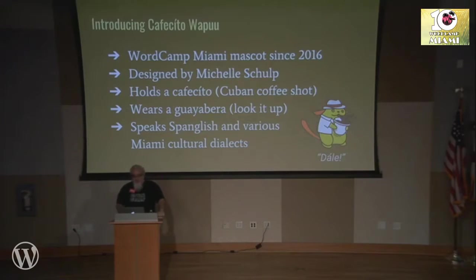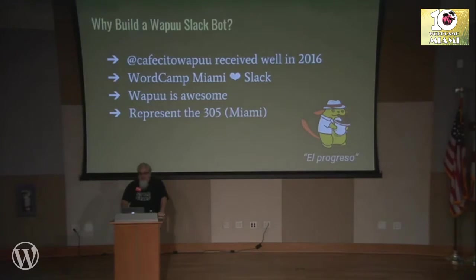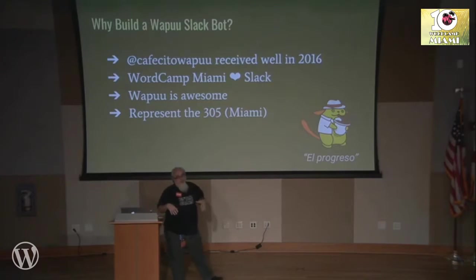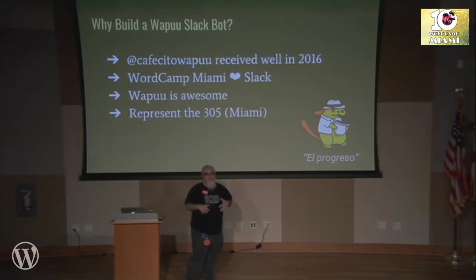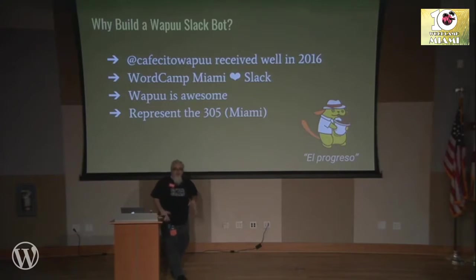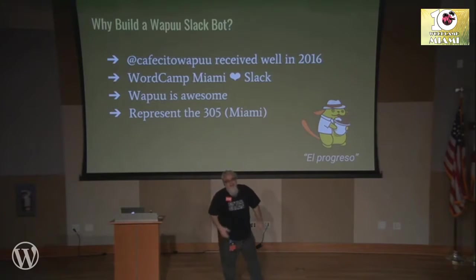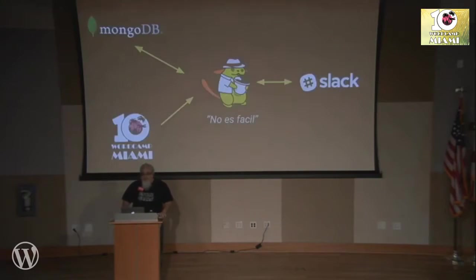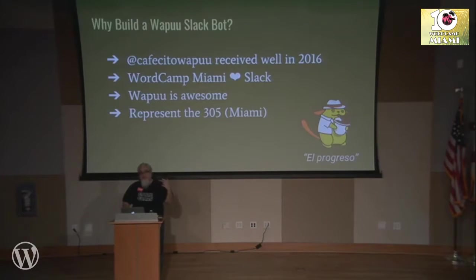And where's the Guayabera? So in 2016, when our Wapu was created, I thought, this is just amazing, this is the most awesome thing. And I decided as one of the organizers, I would create a Twitter account as a personality for Wapu — Cafecito Wapu. So I live tweeted WordCamp as Cafecito Wapu. I took the opportunity to introduce people to stuff about Miami, Spanglish, all sorts of different things. And so he kind of got a personality. And then the next year, we decided to create this Slack bot — he would just interact with the personality in Slack.